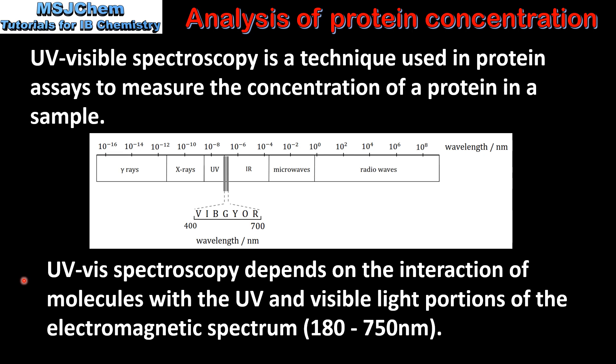UV-vis spectroscopy depends on the interaction of molecules with the UV and visible light portions of the electromagnetic spectrum, with a wavelength of between 180 and 750 nanometers.